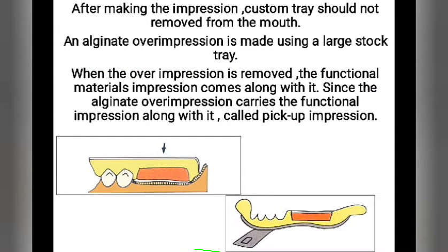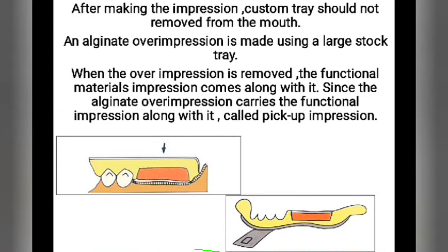After making the impression, the custom tray should not be removed from the mouth. An alginate over-impression is then taken with a large stock tray, as you can see here. When the over-impression is removed, the functional impression material comes along with it. Since the alginate over-impression carries the functional impression along with it, it is called a pickup impression, as clearly seen in this diagram.